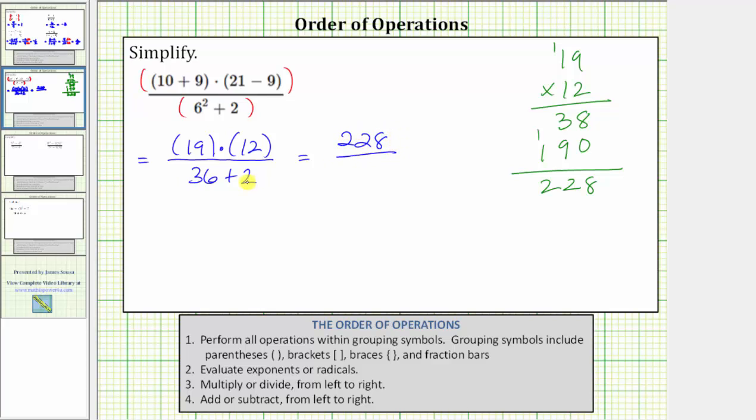And the denominator, 36 plus 2 equals 38. And now we simplify the fraction. In this case, I think 38 is a factor of 228. And therefore, to simplify, because a fraction bar means division, we can divide 228 by 38.